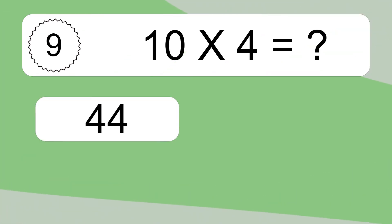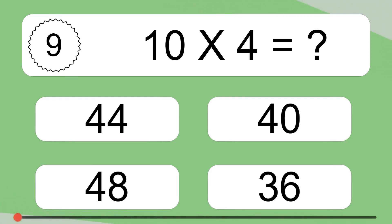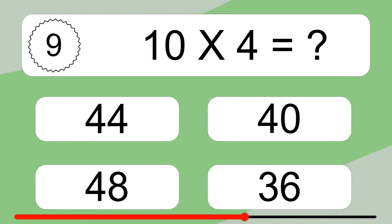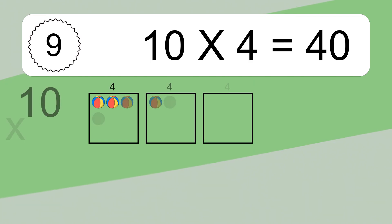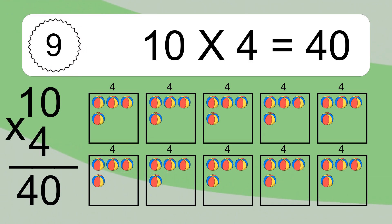10 times 4 equals what? 10 times 4 equals 40. We have 10 boxes, and each box has 4 colorful balls inside. If you count all the balls in all the boxes together, you will have 10 times 4 balls. This equals 40 balls.